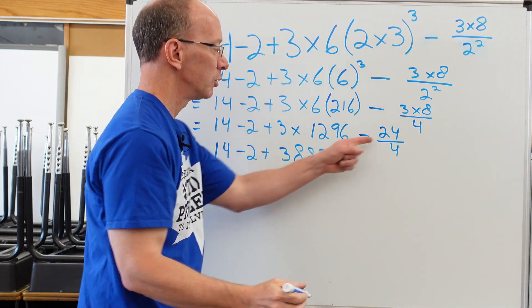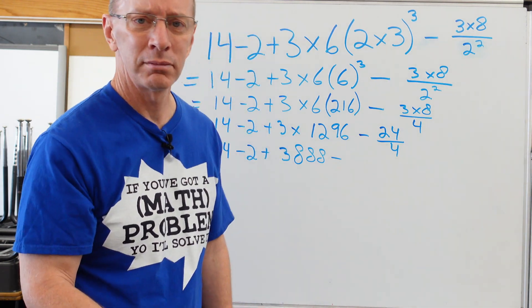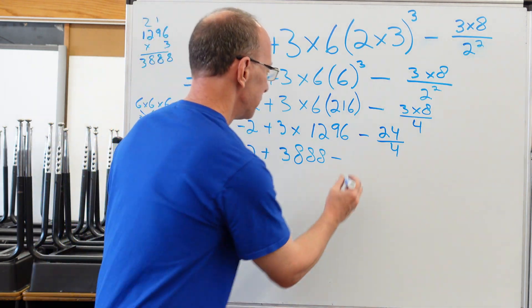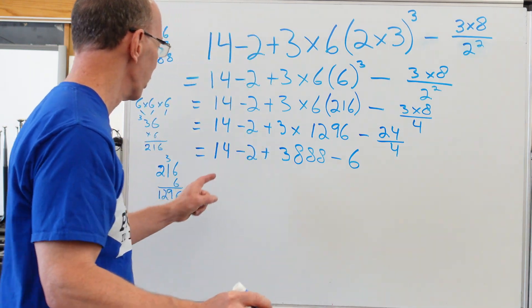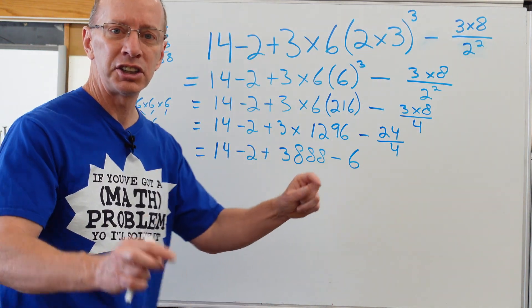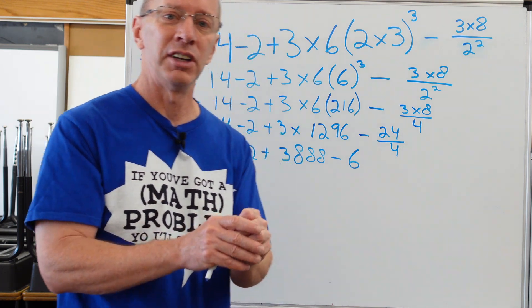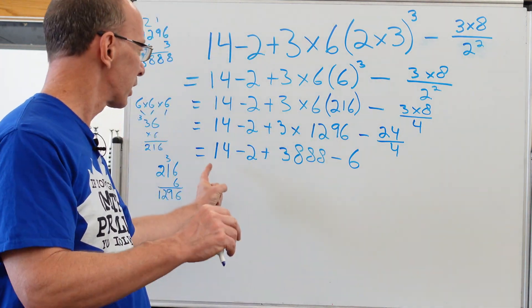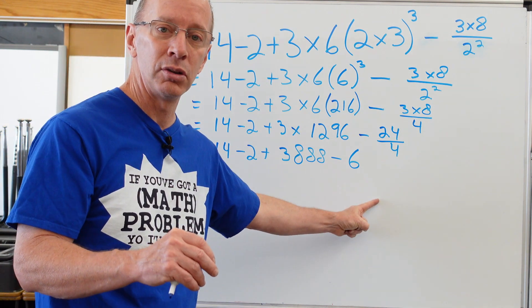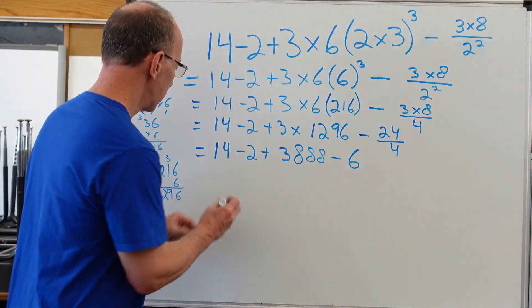Minus what is 24 divided by four. Yeah, six. You guys are math ninjas. You're doing great. So I just finished doing all my multiplication and division. Now I have addition and I have subtraction and we're going to work on that from left to right. So let's go ahead and do that.